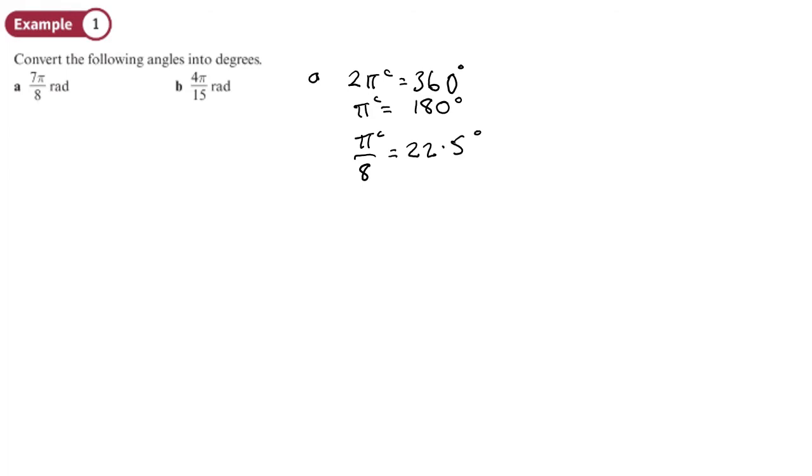So I'm doing pi here. So 7 pi over 8, so if I times 22.5 times that by 7. So I'll just do that quicker on the calculator. So 22.5 times by 7. So I'll get 157.5 degrees. So what I did there was said, I'm using what I know that pi radians is 180. So if I divide that by 8, I get 22.5 and then times it by 7.